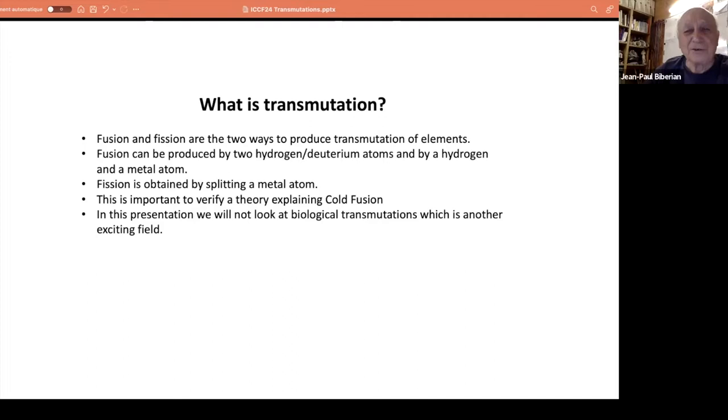What is transmutation? People know transmutation because of the alchemists, who were supposedly producing gold. In the modern days, we know that we can make transmutation, and we do that every day in nuclear reactors. There are two ways of doing transmutation: one is by fusion, and the other one is by fission. Fusion is fusing two light elements to make a heavier element, and fission is breaking up a heavy element to make lighter elements. Fusion can be produced by fusing two hydrogen or deuterium atoms, or maybe a hydrogen atom with a metal atom. Fission is obtained when you split a heavy element.